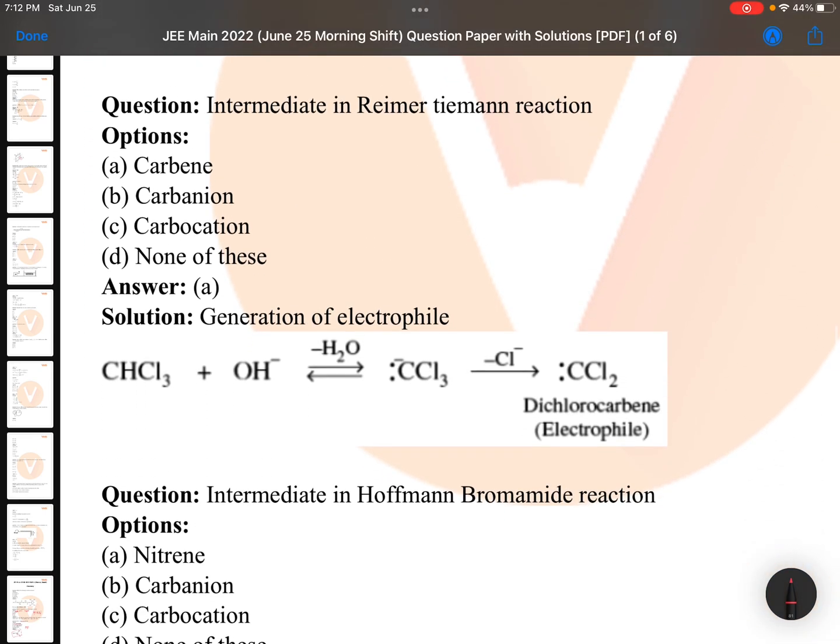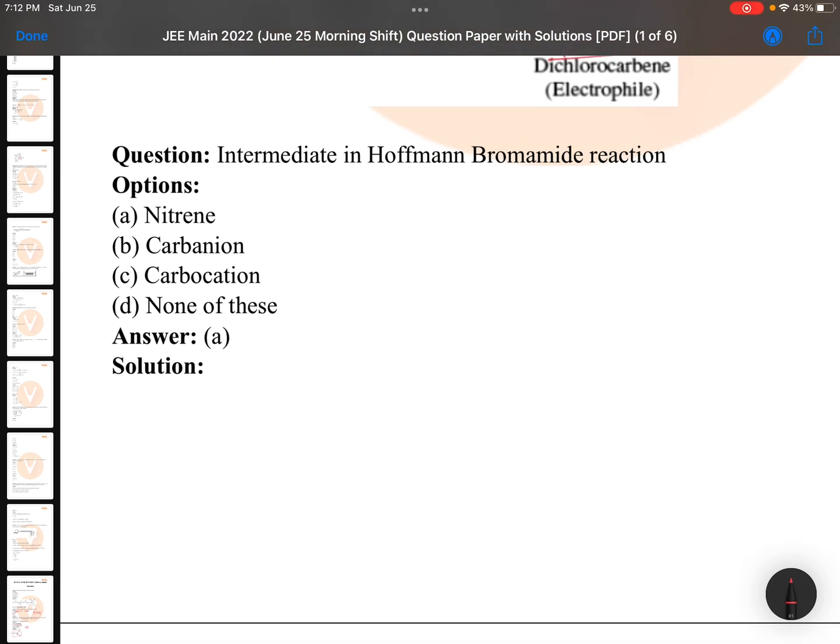Intermediate in Reimer-Tiemann reaction: Just remember your teacher - Reimer-Tiemann reaction, phenyl when treated with chloroform in the presence of base. Repeatedly the intermediate is CCl2, remember this. This question is asked so many times in your internal exams also. Reimer-Tiemann reaction, the intermediate is dichlorocarbene, and interestingly this question is also asked.